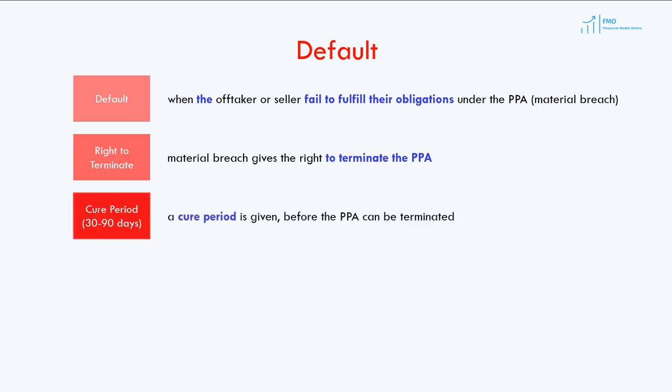Usually, a cure period is given to the defaulting party to fix the problems that are causing the default. The cure period can range from 30 to 90 days in most cases. If the problems are not fixed during the cure period, the contract will be terminated.